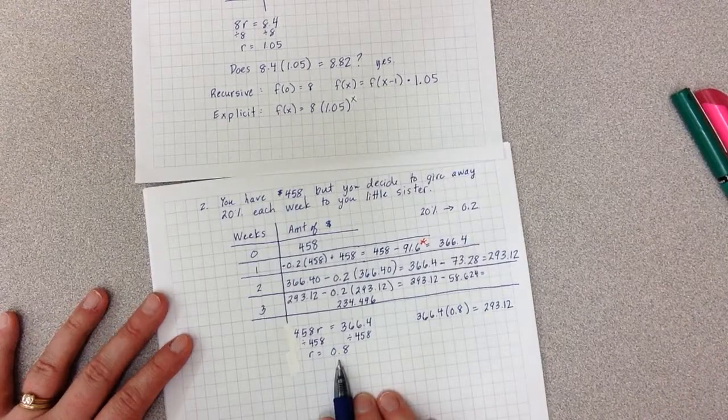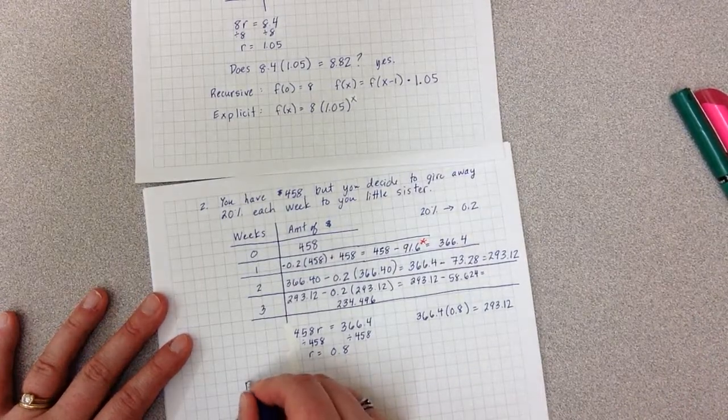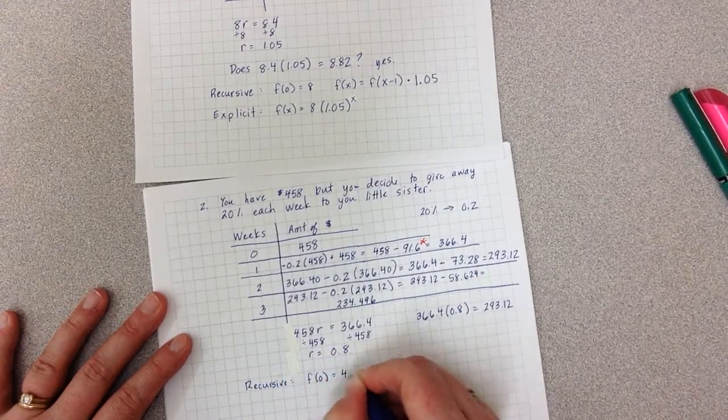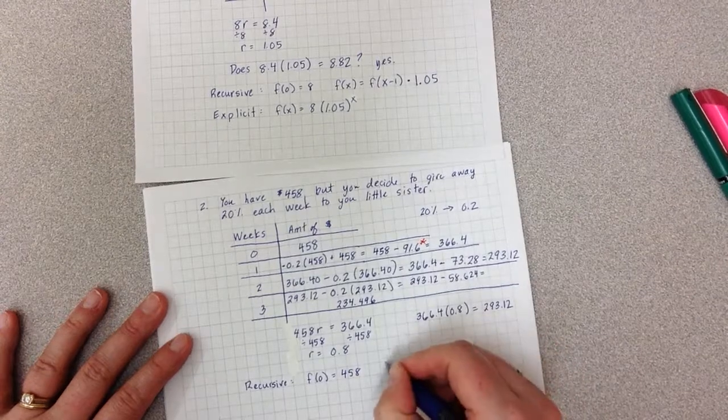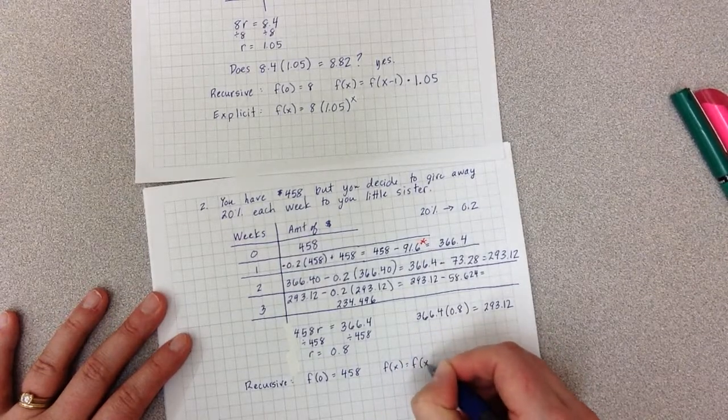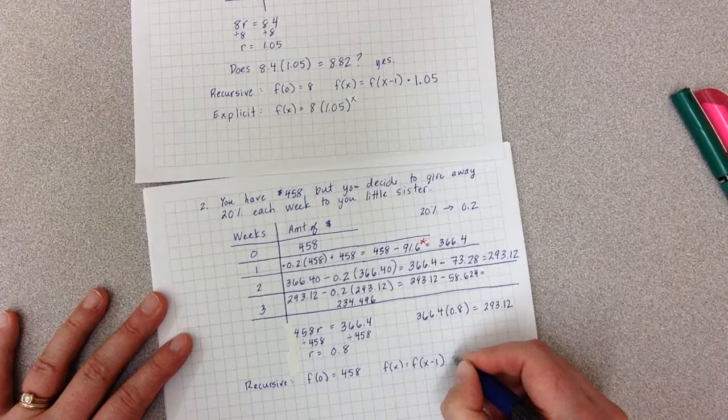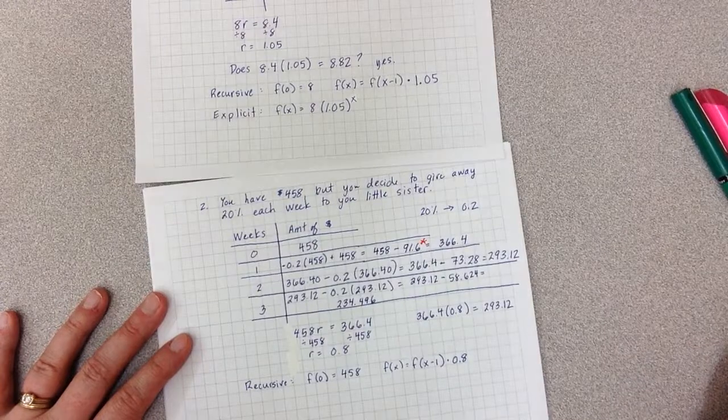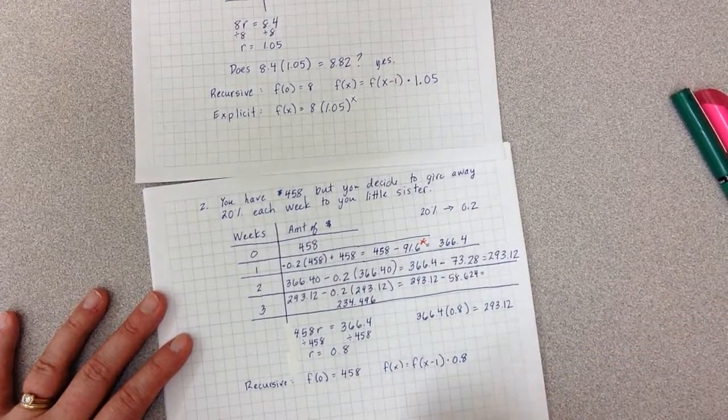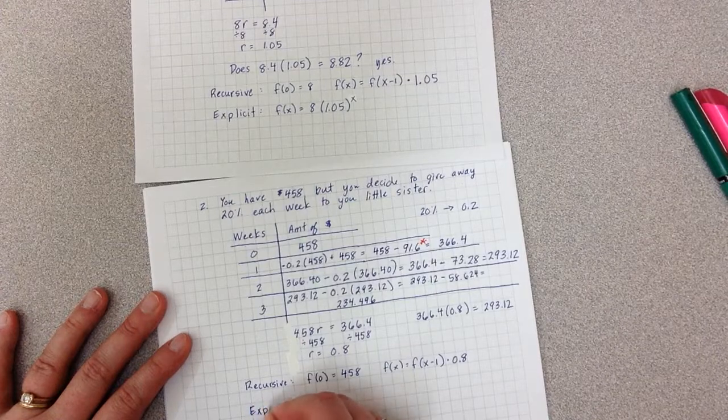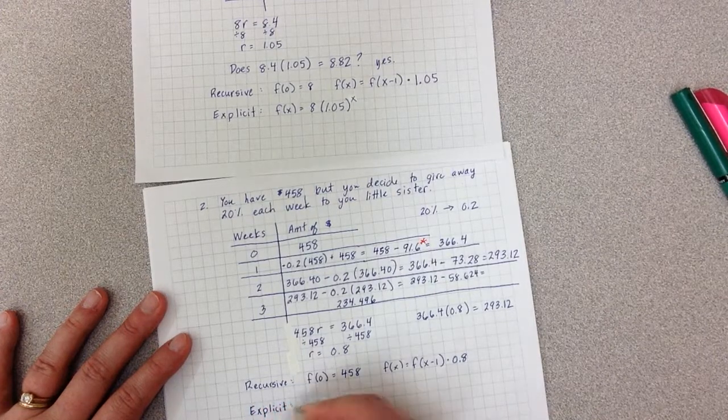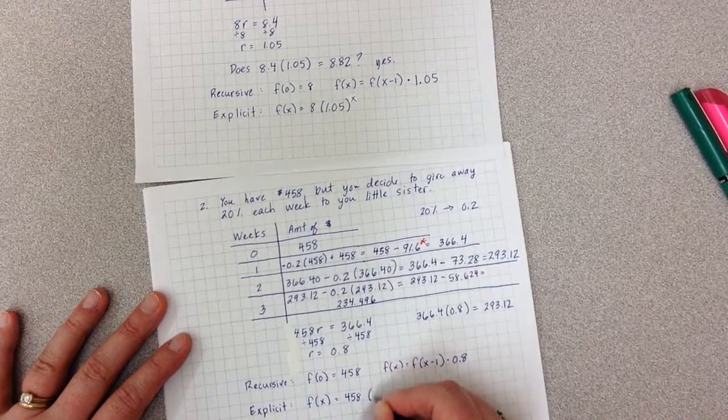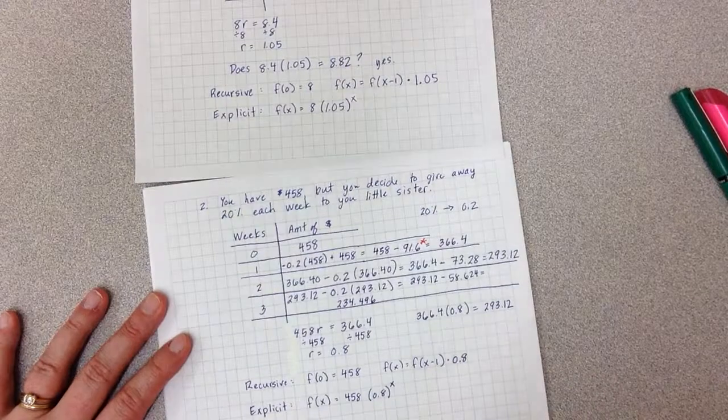Week zero, I have $458. Each week I hand off 80% of what's left, sorry, 20% to my sister, which is multiplying by 0.8. My explicit, therefore, is what I started with, times 0.8 to the x power.